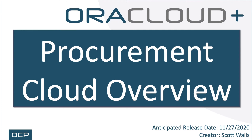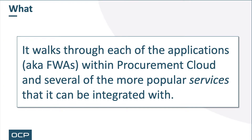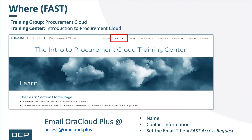Hello and welcome to the Procurement Cloud review video presentation. This video is intended for beginners looking to learn more about the capabilities of Oracle's Procurement Cloud offering, otherwise known as a suite of applications. It walks through each of the applications, also known as functional work areas, within Procurement Cloud and several of the more popular services that it can be integrated with. This video snippet can be found within FAST, our Fusion Application Support Tool, in the Procurement Cloud Training Group and the Introduction to Procurement Cloud Training Center under the Learn menu option.